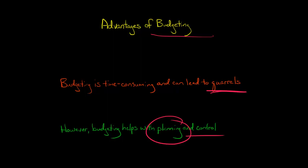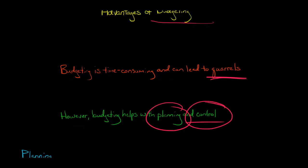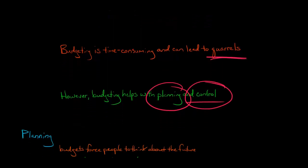So planning basically has to do with setting goals, and then control has to do with making sure the company achieves those goals. In terms of planning, think about it like this.